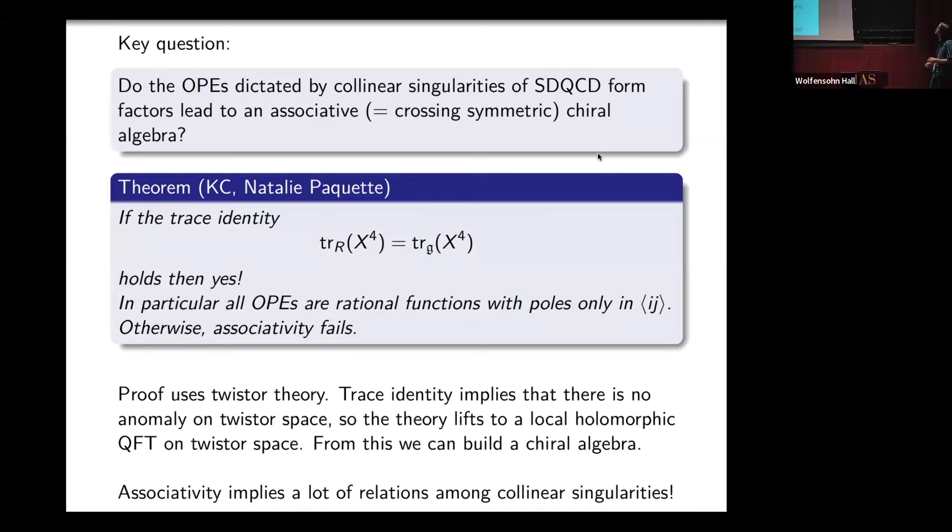The key question is, do these OPEs satisfy the axioms of a chiral algebra? Do they satisfy crossing symmetry or equivalently associativity? Our theorem is that if this identity holds, then yes, they do. I'm not going to give you anything about the proof of this theorem. We prove it using twistor theory, but perhaps you could think, twistor theory is all about holomorphic geometry. This trace identity tells us there is no anomaly on twistor space, so we have a nice theory on twistor space. It's not crazy to think that you can use the holomorphic geometry of twistor space to build a holomorphic chiral algebra.